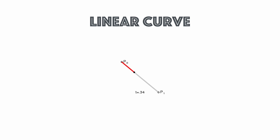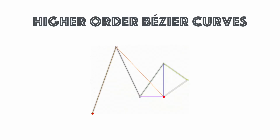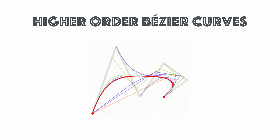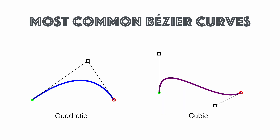So that was two control points, one control point. There's also a special case with zero control points — you get a linear curve, also known as a straight line. You can also have higher-order Bézier curves; this is a fifth-order Bézier curve. But the most common ones are the quad curve and the cubic one.